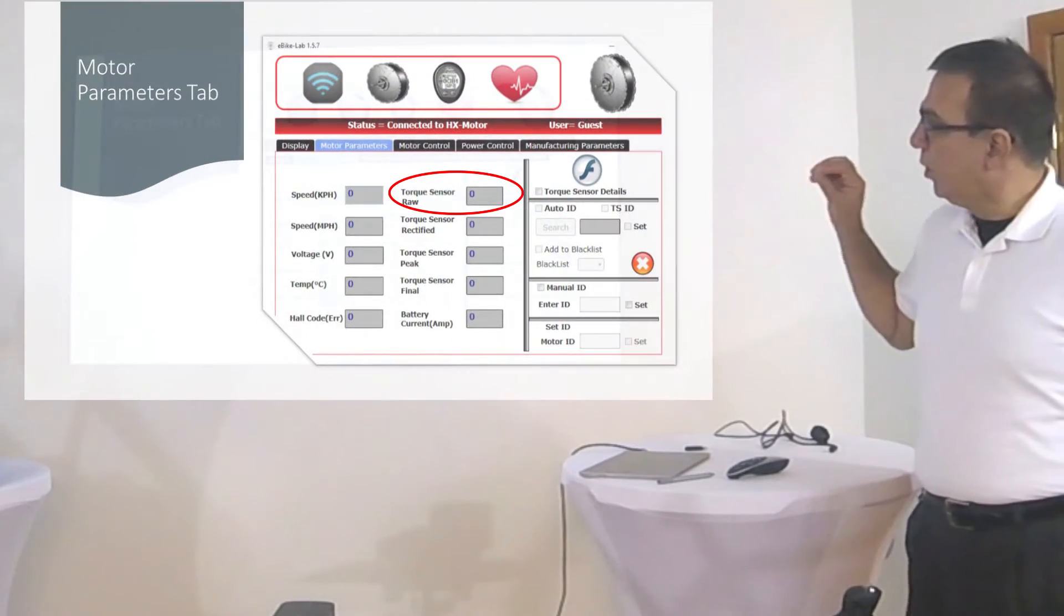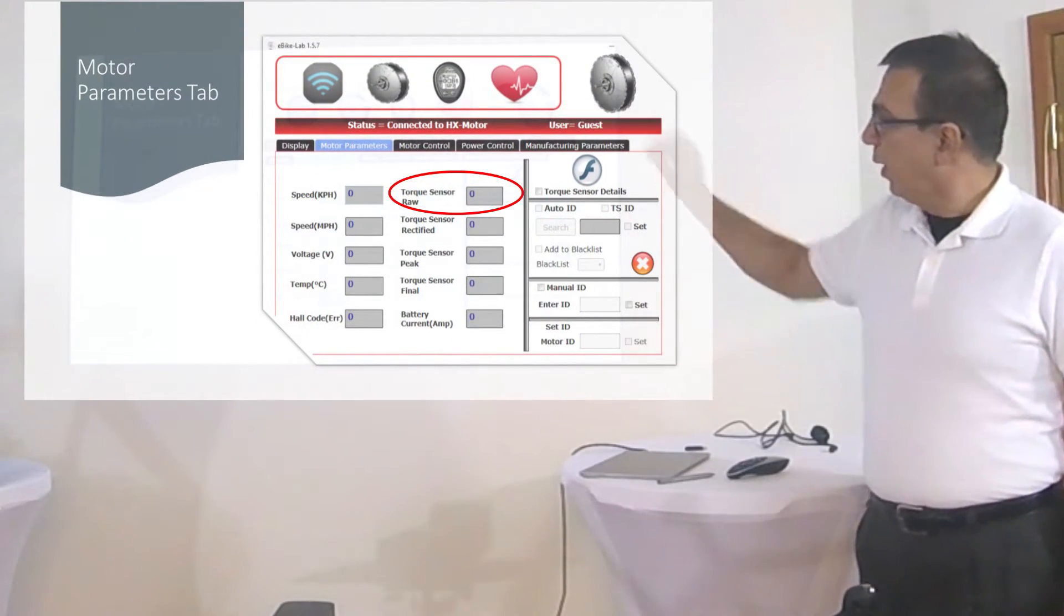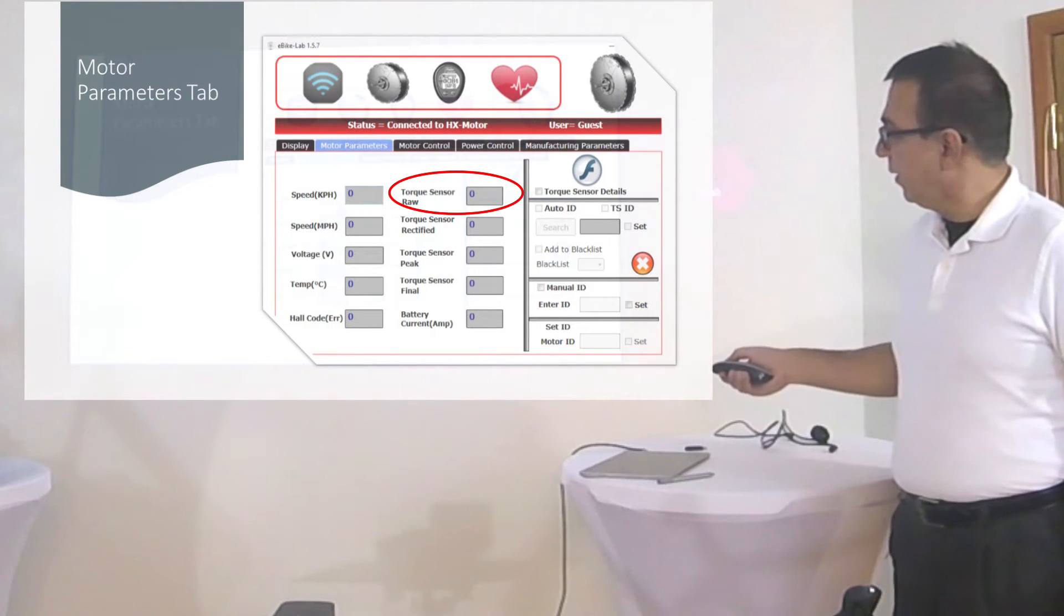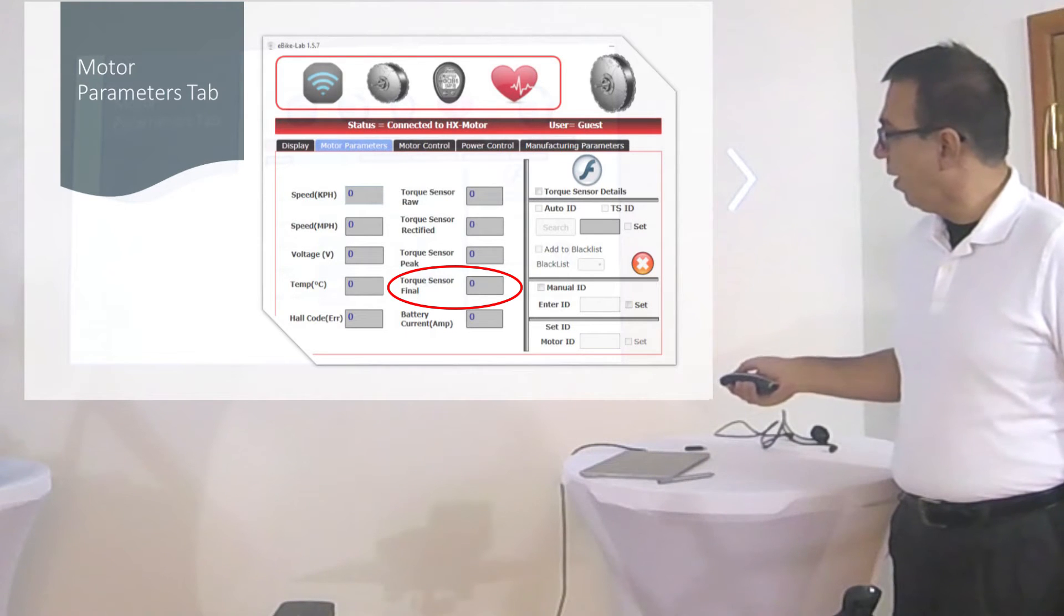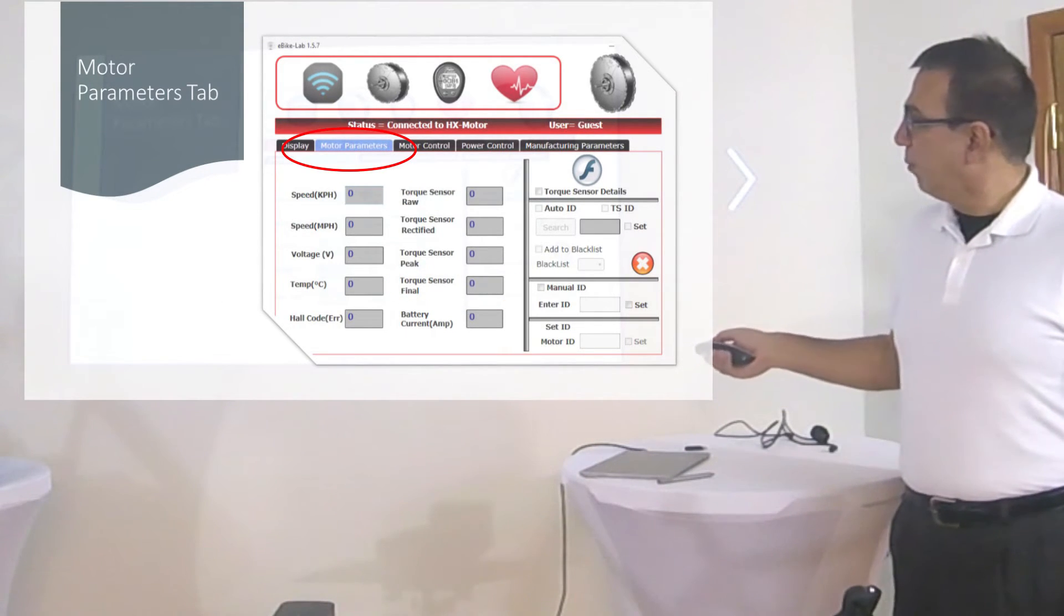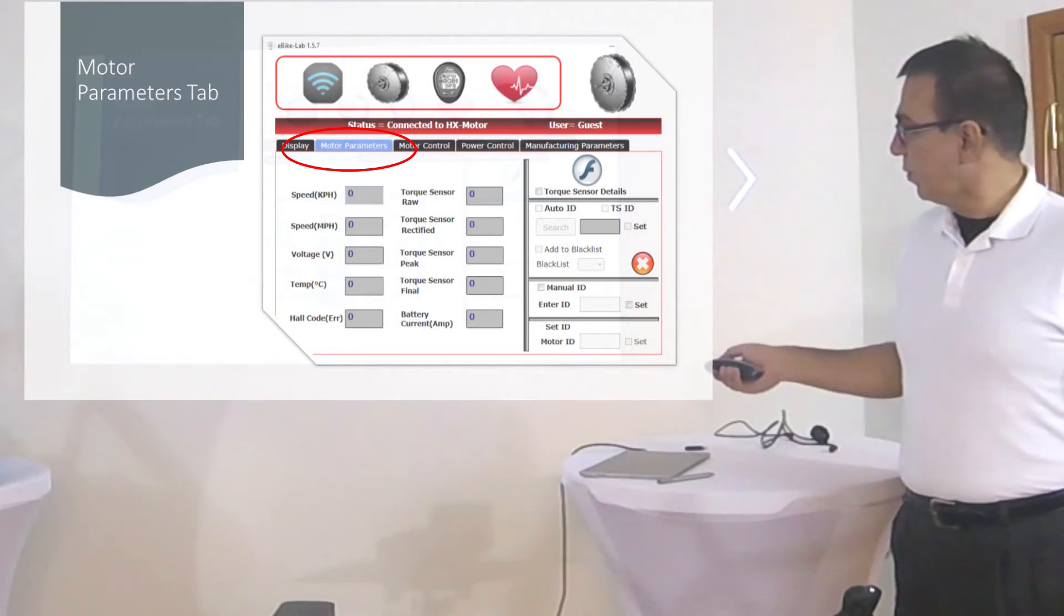This screen shows you where the torque sensor raw value and the torque sensor final values are. You can see this is the motor parameters tab, and the motor parameters tab has these two values.